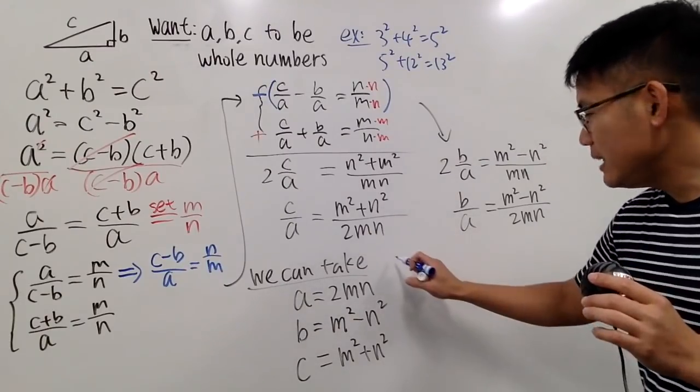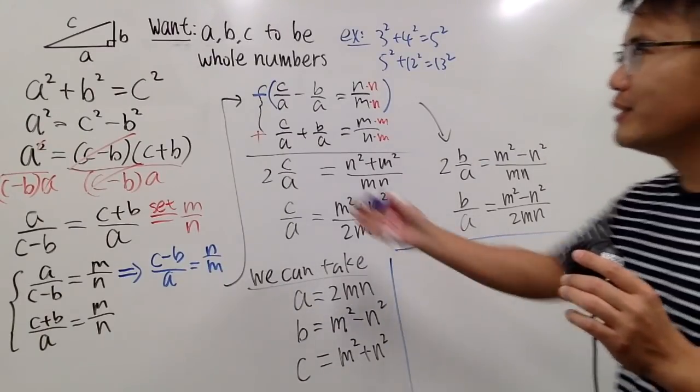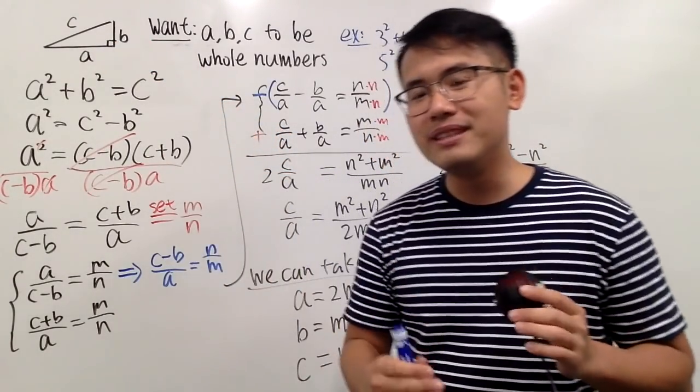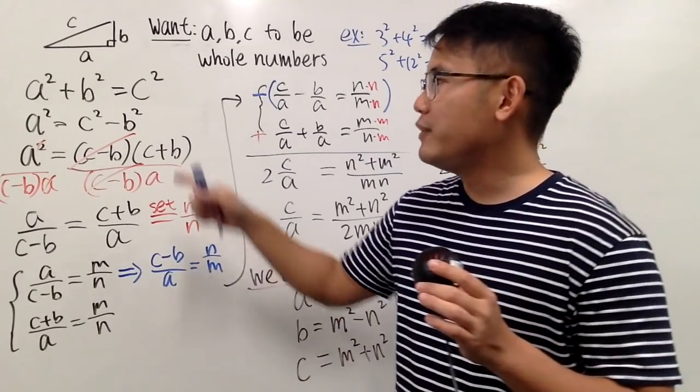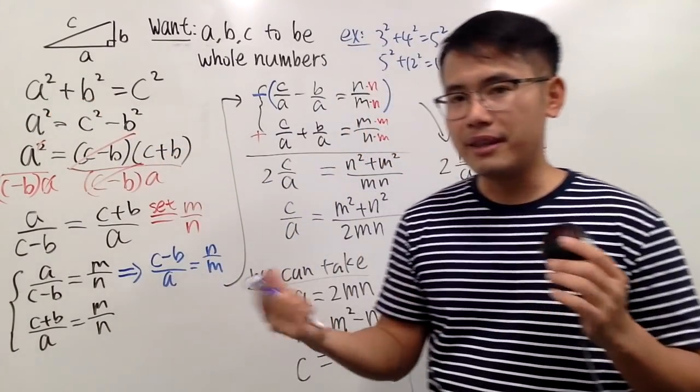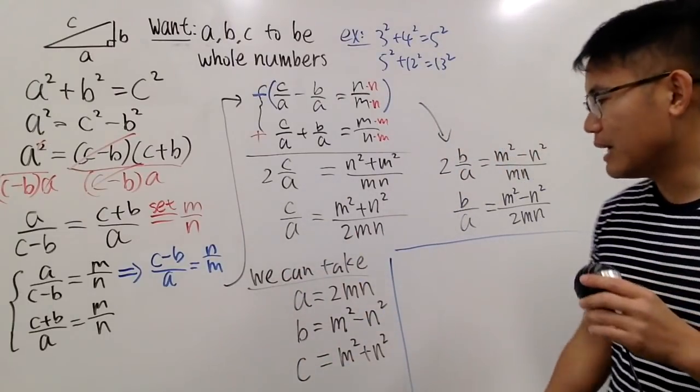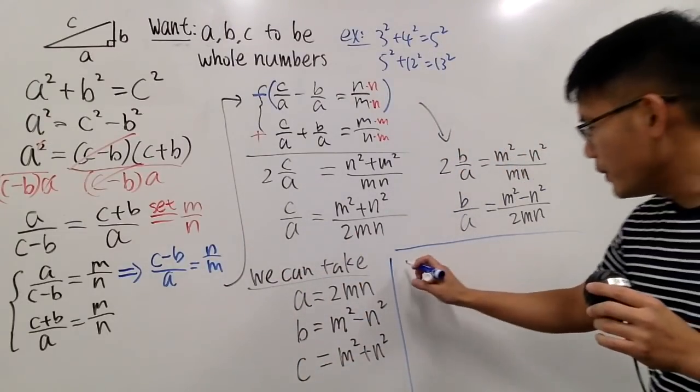And of course, it depends if you are still talking about triangles or not. Because if you are still talking about triangles, then ABC have to be positive. But if you are just looking at this as a number theory question, and you are allowing A, B, and C to be negative, that's fine too. Up to you. Anyway,